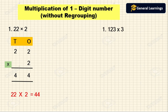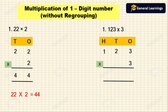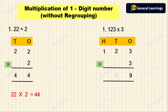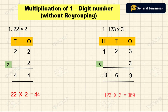Next example uses a three-digit number. The place values are ones, tens, and hundreds. First we multiply the ones column: 3 into 3 is 9. Next we multiply the tens column: 2 into 3 is 6. Next we multiply the hundreds column: 1 into 3 is 3. So 123 into 3 is 369.